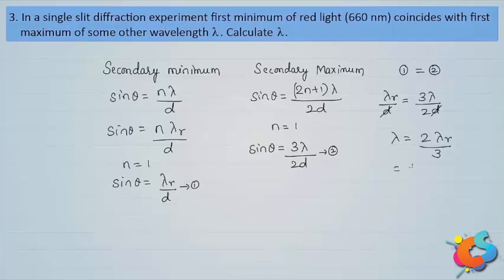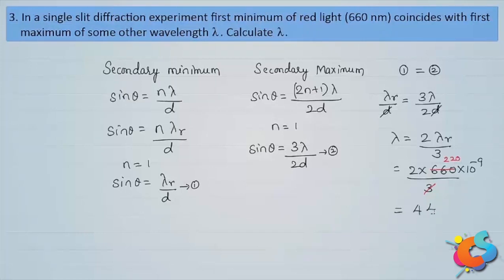The wavelength of red light is given as 660 nanometer. Therefore, λ = 2×660×10⁻⁹ / 3 = 440 nanometer. So 440 nanometer is the unknown wavelength.